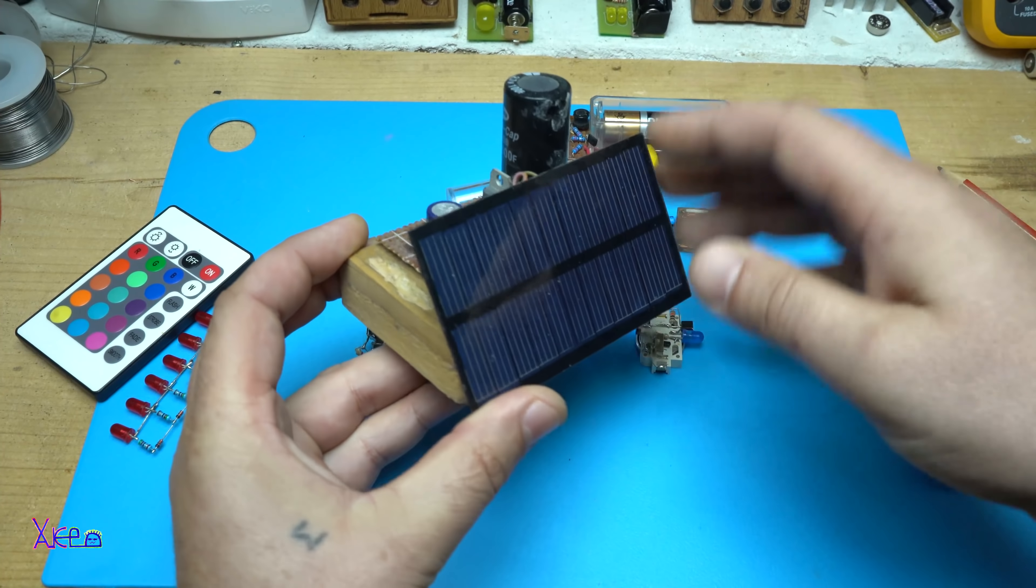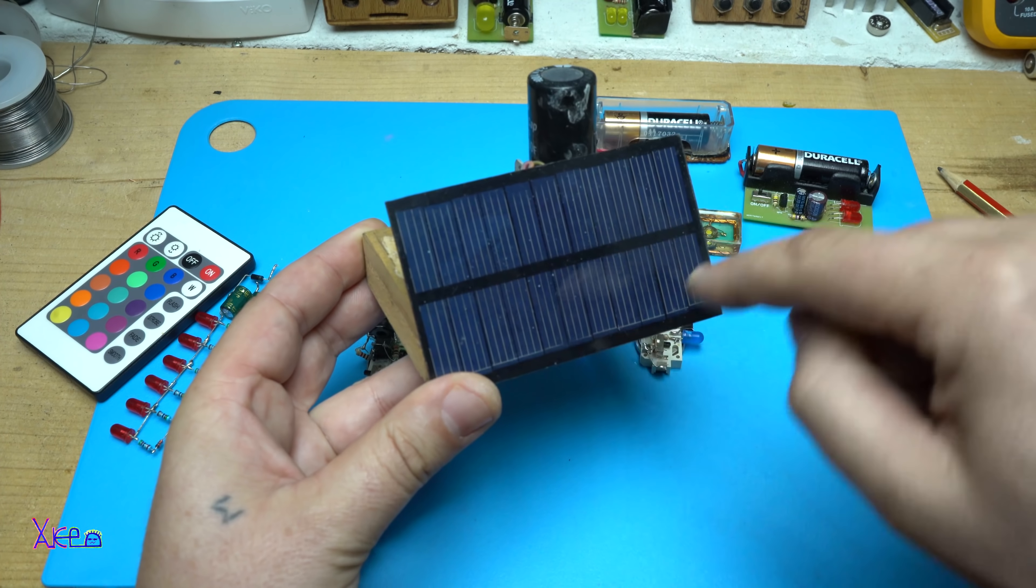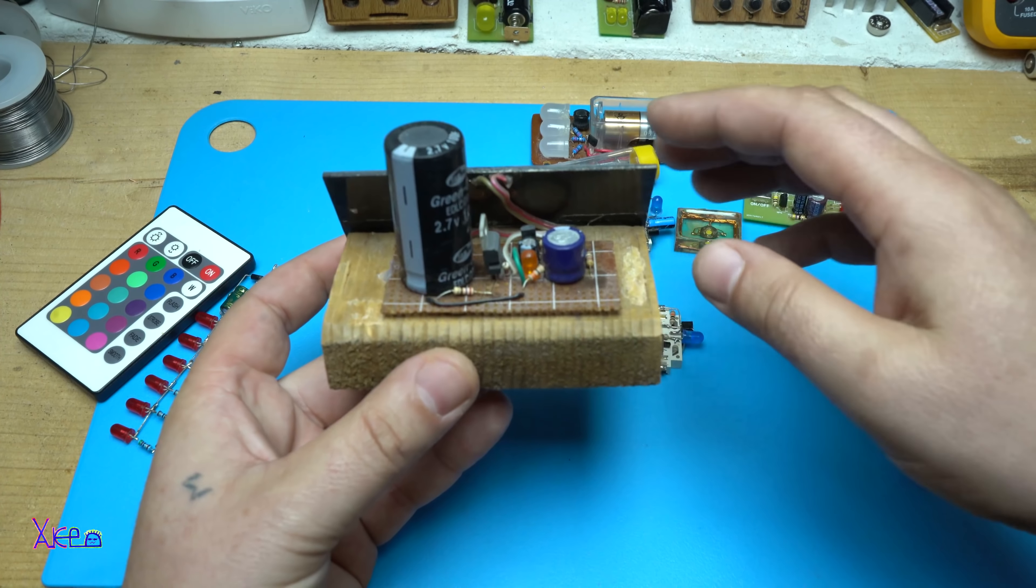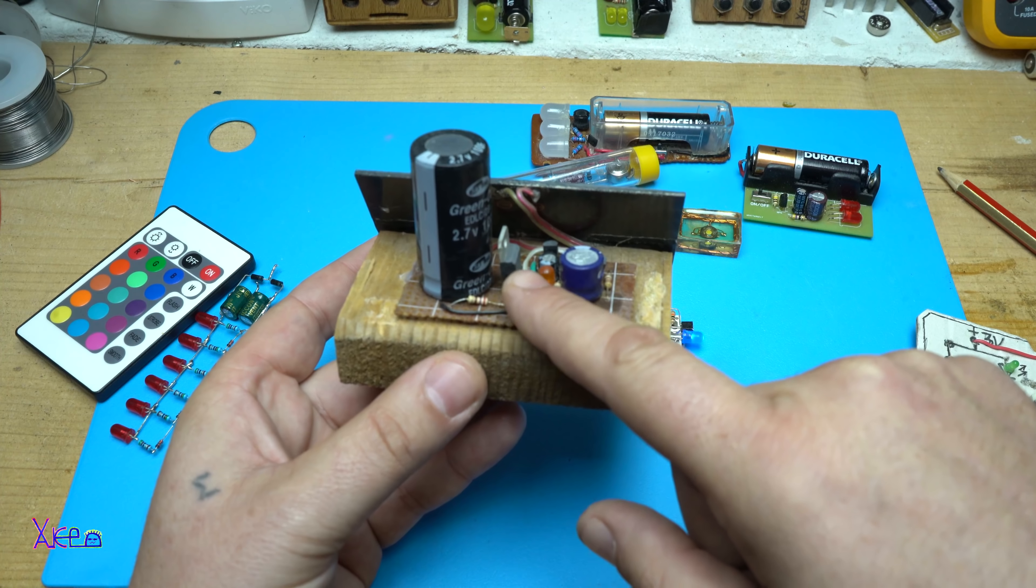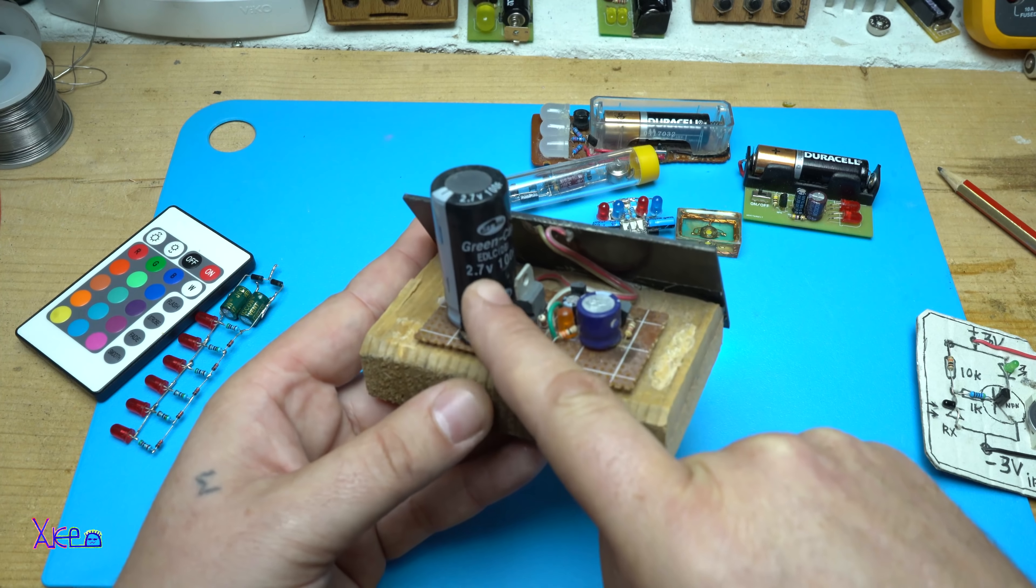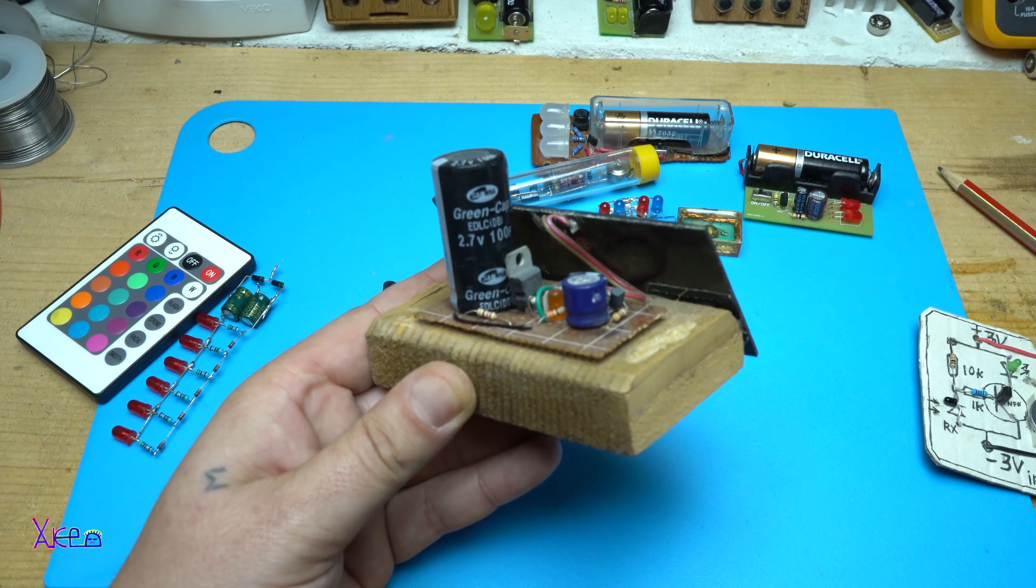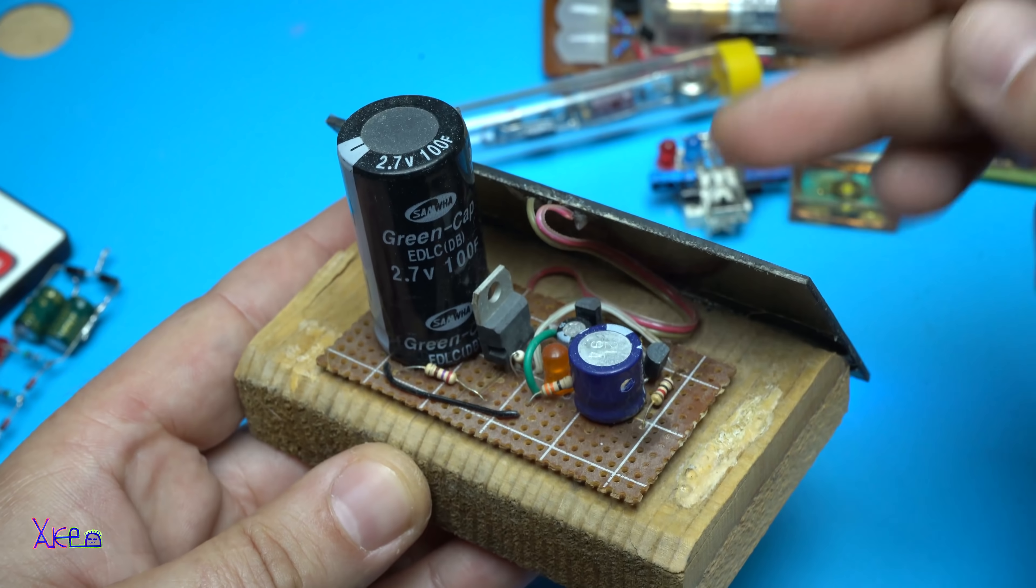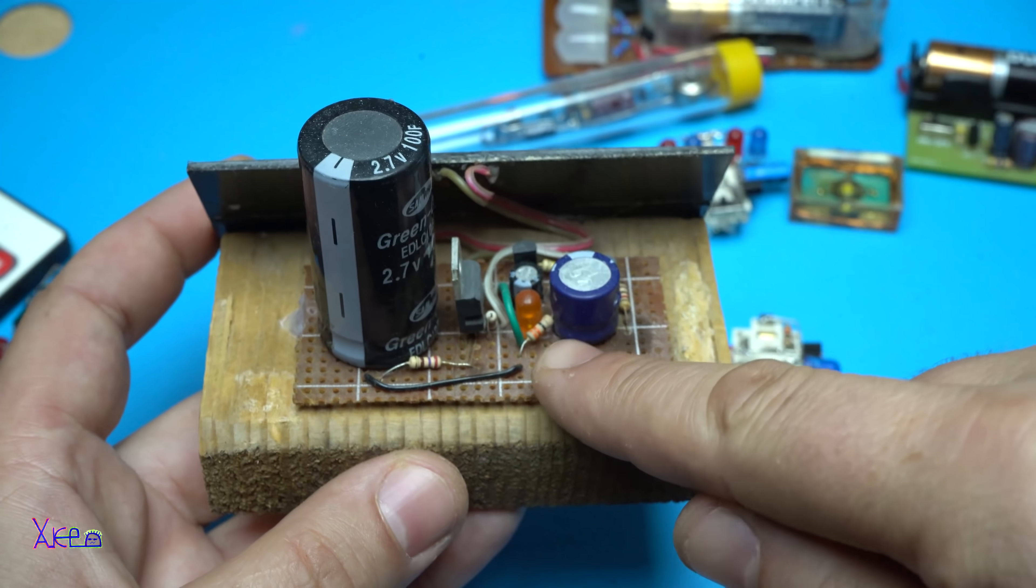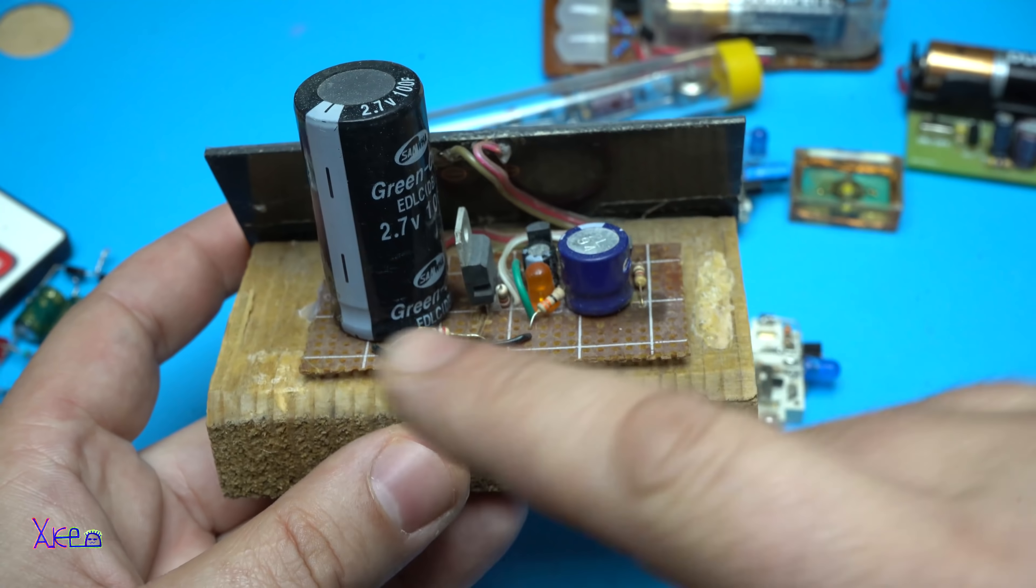And what about this project? It's a small solar panel 5 volts, and I have added a voltage regulator for charging the super capacitor 2.7 volts 100 farads. At day the solar panel will charge the super capacitor and then all night the LED will blink without using a battery.